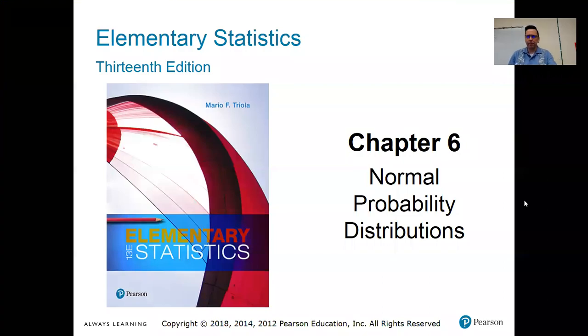Hi everybody, it's Professor Mitchell. Today we're starting Chapter 6. Chapter 6 is really about continuous probability distributions, but it's mostly about the normal probability distribution.